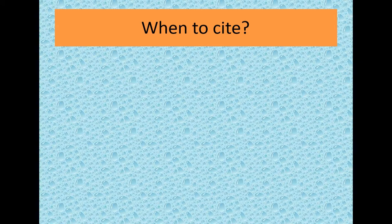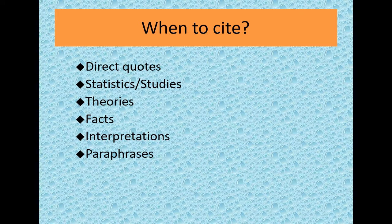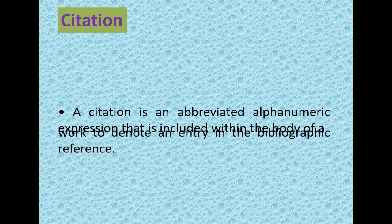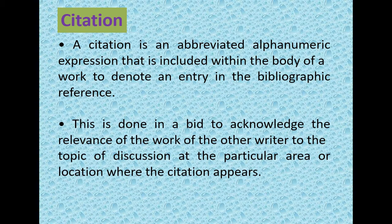When to cite: direct quotes, statistics, studies, theories, facts, interpretations and paraphrases. A citation is an abbreviated alphanumeric expression included within the body of a work to denote an entry in the bibliographic reference. This is done to acknowledge the relevance of the work of another writer to the topic of discussion at the particular area or location where the citation appears.